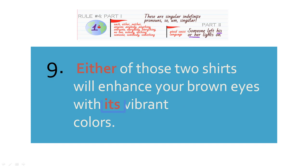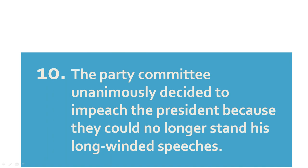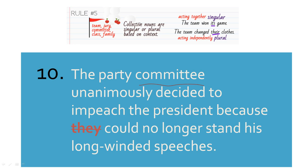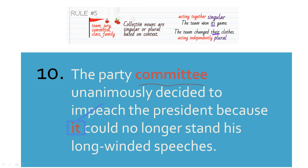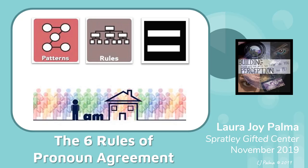Our final example: 'The party committee' — committee is one of our collective nouns. We need to decide: are they acting independently or as a group? If they're unanimously deciding something, then they're acting collectively. We change 'they' to 'it,' and now we have agreement.